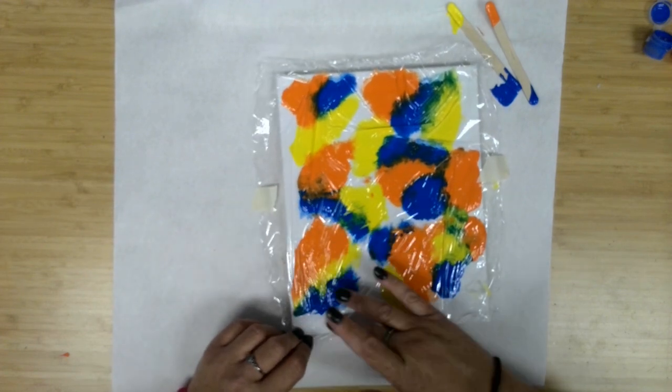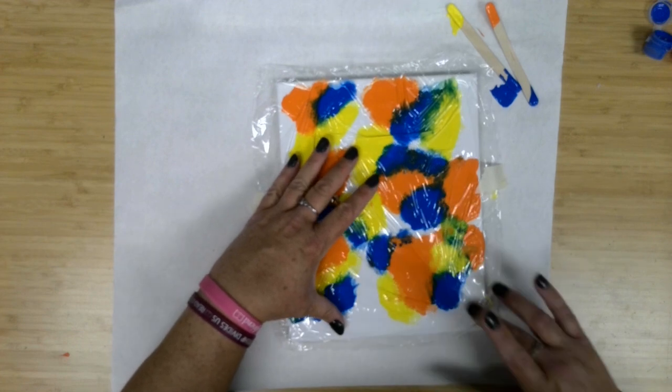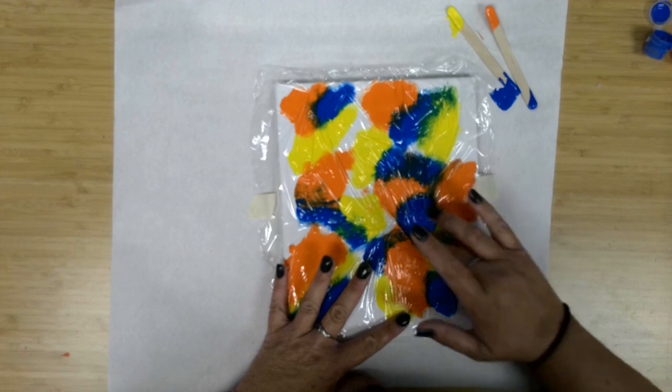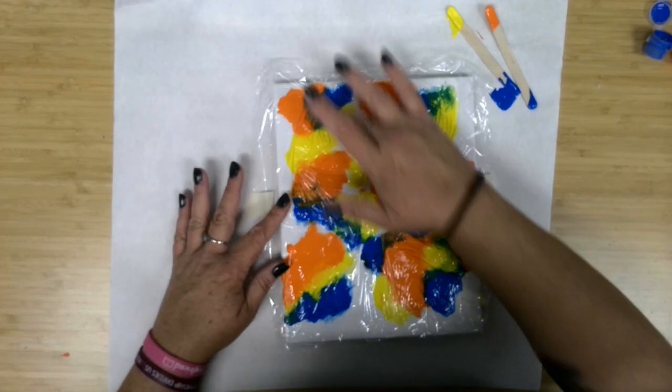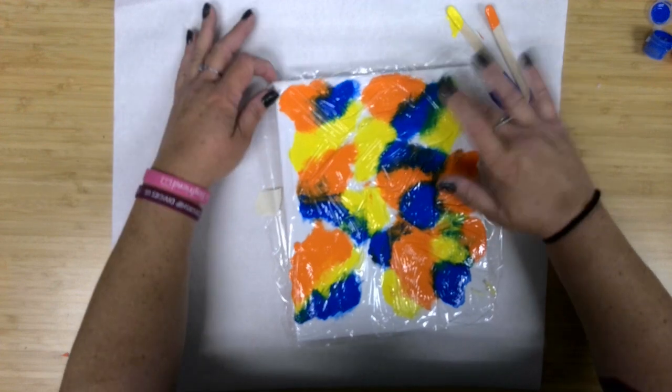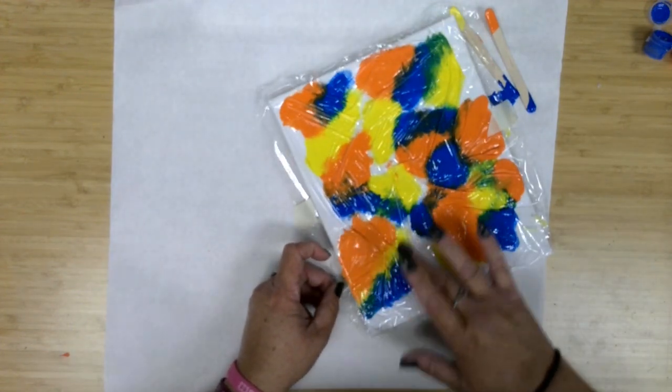So I'm just pushing if I feel any kind of puddles of paint pushing them around so that I've got kind of a smooth coverage. And then here's going to be the really fun part. I think I've got it pretty good. I've got this pretty close to the edge on this side here we can see.